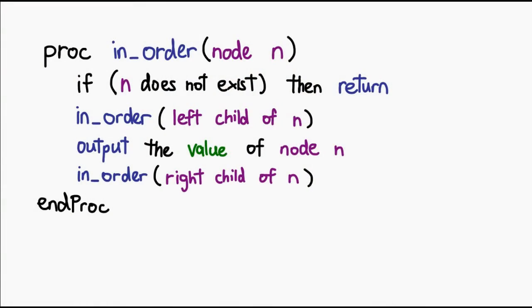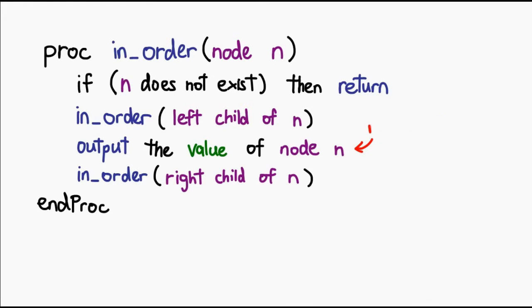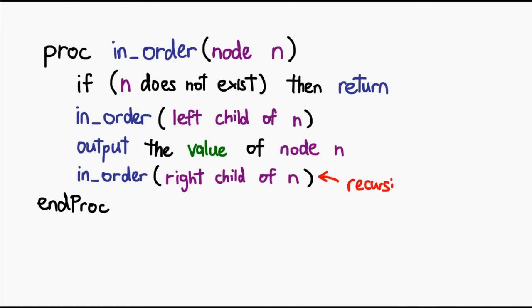So when we're actually coding, essentially in-order traversal looks something like this. First, before we can begin any computation, we want to check if the node we are inspecting even exists in the first place — obviously we won't have to do anything if it doesn't. Then in-order traversal calls itself for the left child node. Then the code reports whatever node it's on, and then it tries to call itself again for the right node.